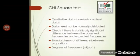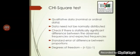A lot of questions are asked about the chi-square test and it has led to a lot of confusion, which is why I made this video. Remember that chi-square test is for qualitative data — for nominal or ordinal data. The data may not be normally distributed. It is used especially to check if there is a statistically significant difference between observed frequencies and expected frequencies. It is also used for standard error of difference between proportions, since there is qualitative data.